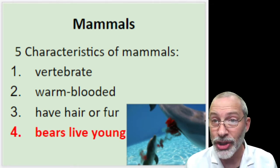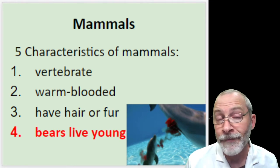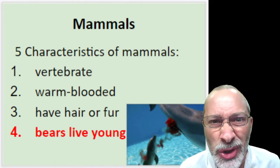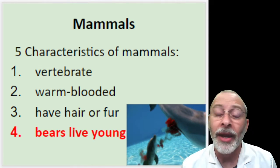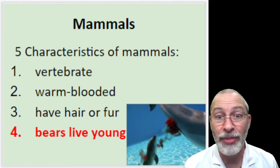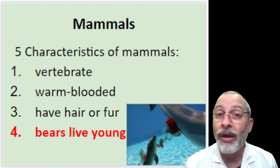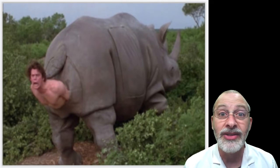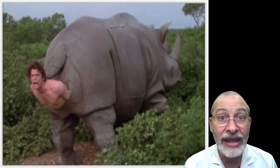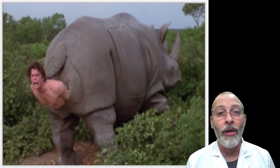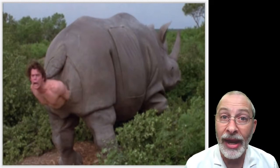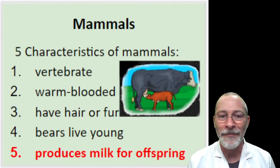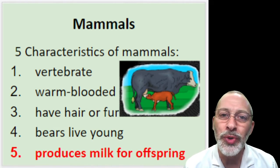Some babies are very cute, like this baby dolphin. Some mammals produce babies that are awfully cute, whereas some mammals produce babies that may not even look anything like the adult form. But all mammals do bear live young.